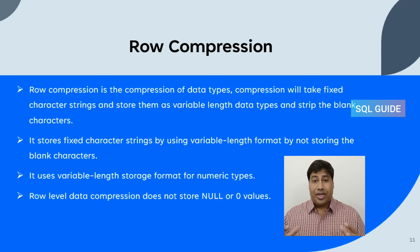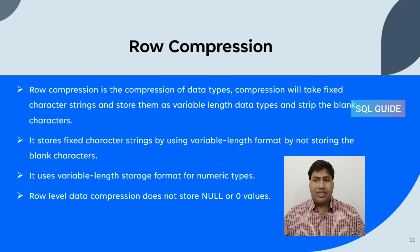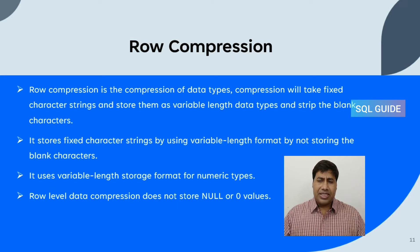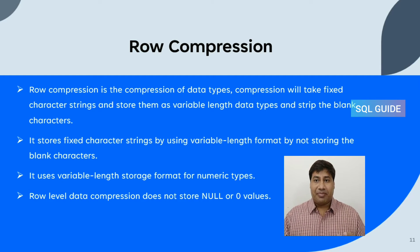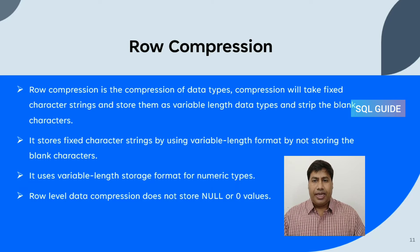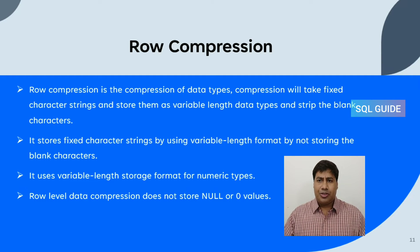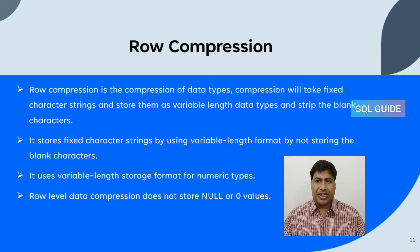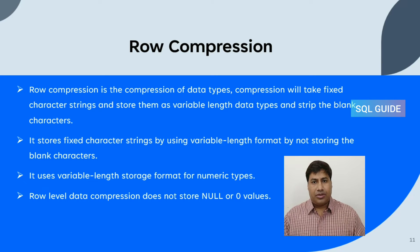What is row compression? Row compression compresses data types by taking fixed character strings and storing them as variable length data types, stripping blank characters. It uses a variable length storage format for numeric types. Row level data compression does not store null or zero values.